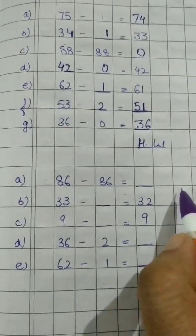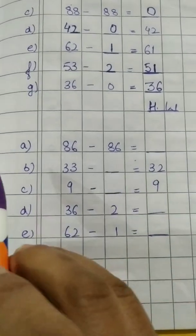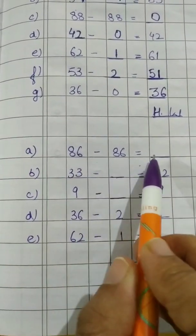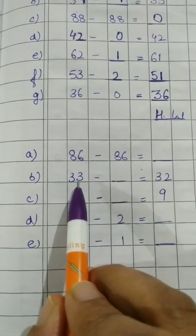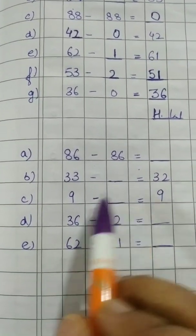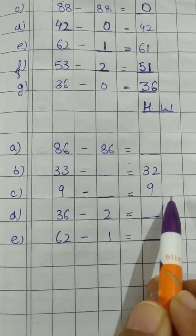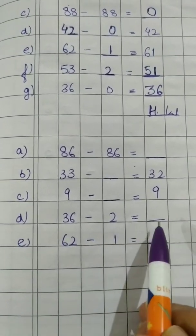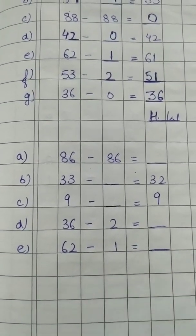So here are some homework questions for you. A part, 86 minus 86 is equal to dash. B part, 33 minus dash is equal to 32. 9 minus dash is equal to 9. 36 minus 2 is equal to dash. 62 minus 1 is equal to dash.